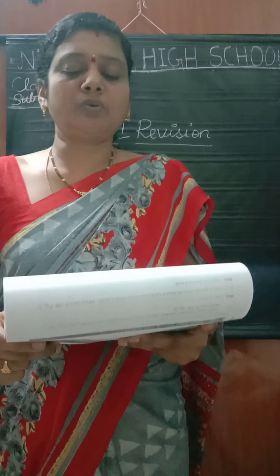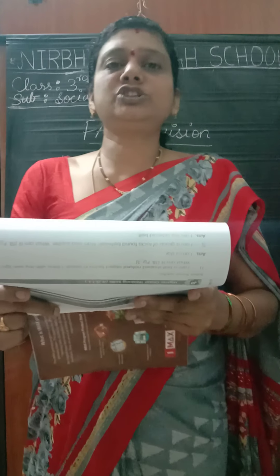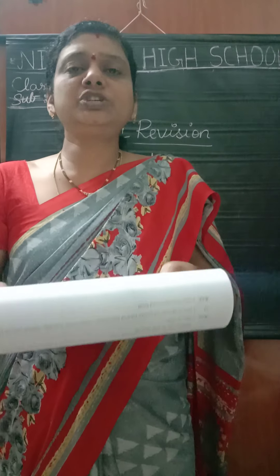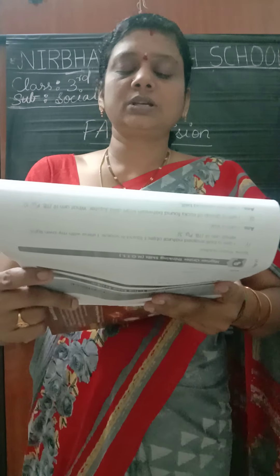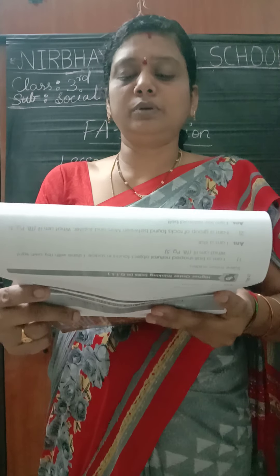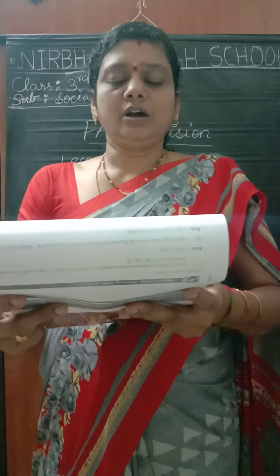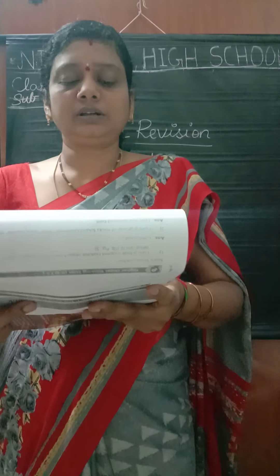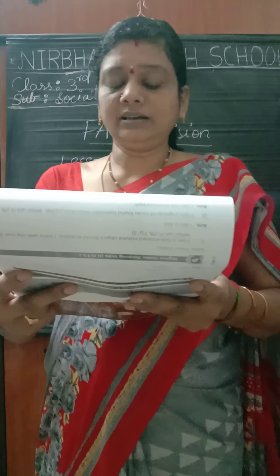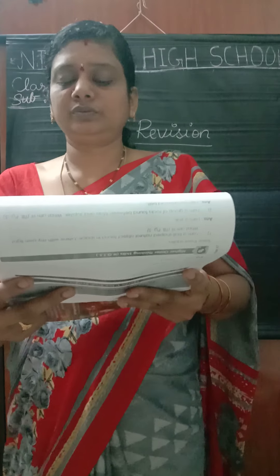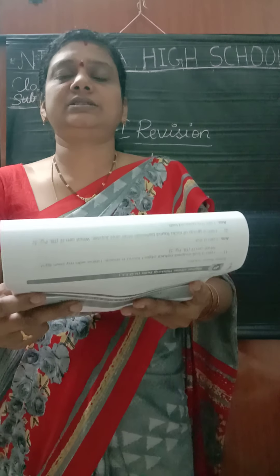Lesson number one: The Solar System. Multiple choice questions. On which planet do the fastest storms blow? The four options are: A. Jupiter, B. Earth, C. Mars, and D. Neptune. Which one is correct? Neptune is correct.